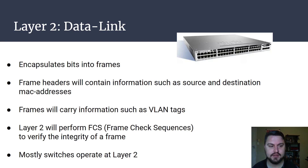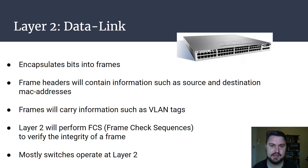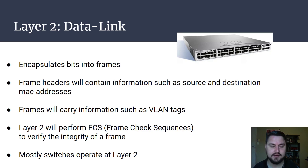Layer two is the data link layer. This is the layer that encapsulates those bits into frames. Frames are what's used between switch ports to send traffic. Frames can contain things such as source and destination MAC addresses. Frames can also contain VLAN information to make sure traffic goes into the right broadcast domain. It's also at layer two where we see things like frame check sequences, or FCS, which is responsible for making sure a frame isn't corrupt — if a frame is corrupt, it will just be dropped. You will mostly see switches operating at this layer. If you hear somebody talk about a layer two issue, it could be that the switch port is down, or that there's a wrong VLAN or the VLAN isn't being tagged correctly on a port.